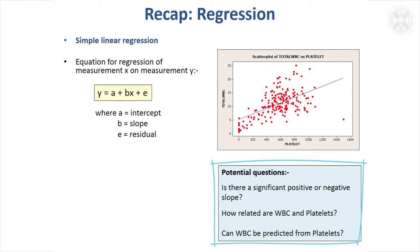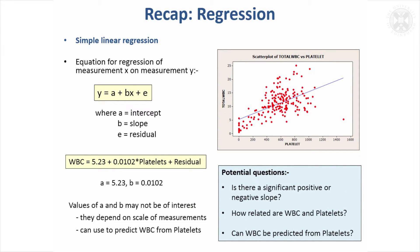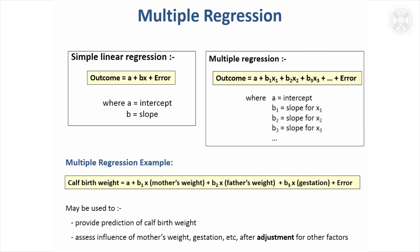We can predict white blood cell count here from values of the platelets. That's the actual equation that we got, so by calculating this bit we can predict for a given value of platelets what the white blood cell count is likely to be. Of course in practice, I don't think that would really be something we'd be interested in, but in other applications it might be useful to know that you can predict things from a regression.